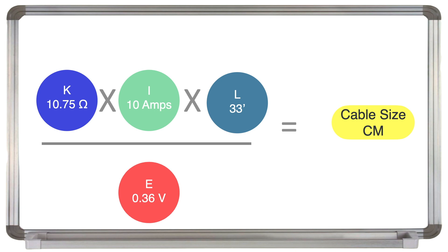We want to ensure that we don't exceed a 0.36 volt drop with this circuit. So we just tap into the calculator, 10.75 times 10, times 33, divided by 0.36. And this will give us 9854 circular mils.